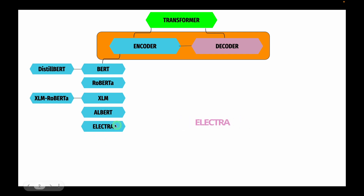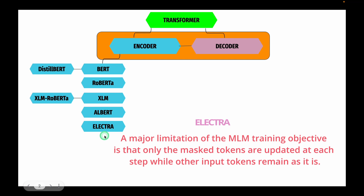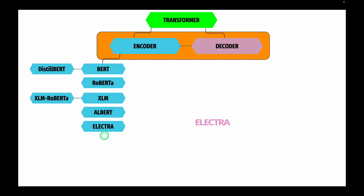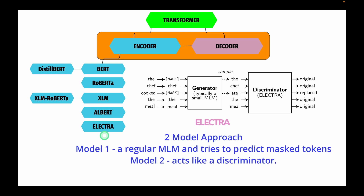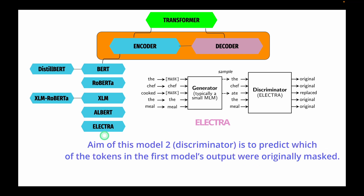The next encoder-only architecture is ELECTRA. One major limitation of Masked Language Modeling or MLM is that only the masked tokens are updated at each step while other input tokens remain as-is. ELECTRA solves this issue using a two-model approach. Model 1 is like a regular MLM and tries to predict masked tokens, whereas Model 2 acts as a discriminator and predicts which tokens in Model 1's output were originally masked.